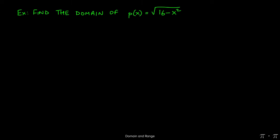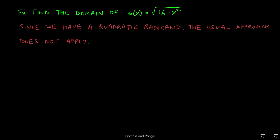Let's say we're asked to find the domain of the function p(x) equals the square root of 16 minus x squared. We start by recognizing that because we have a quadratic radicand, the usual approach of just setting the radicand greater than or equal to 0 is not going to apply. So we're going to have to approach this problem in stages.